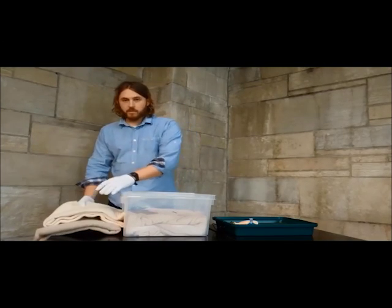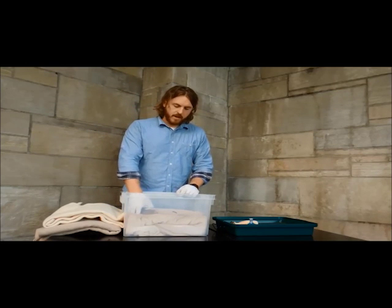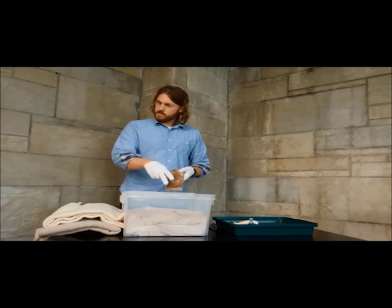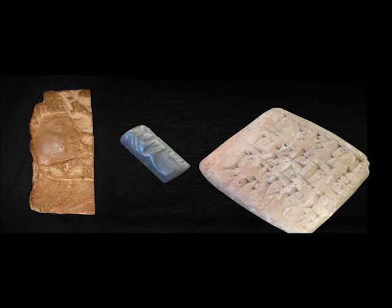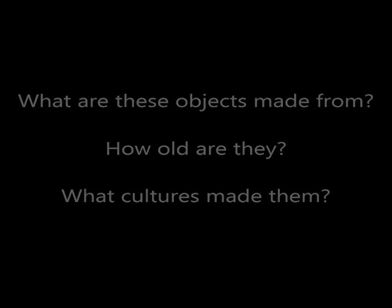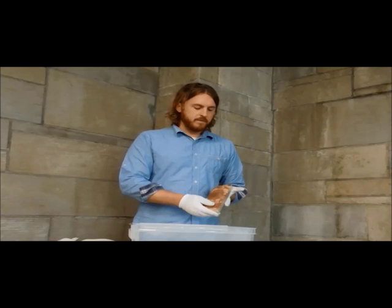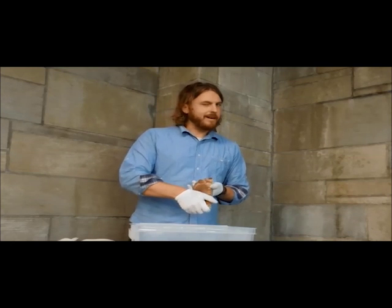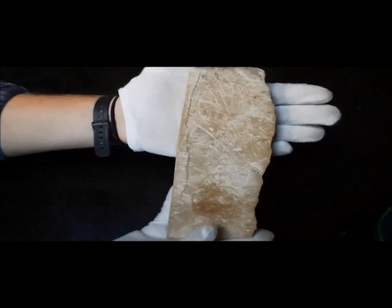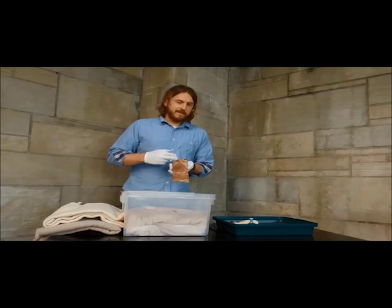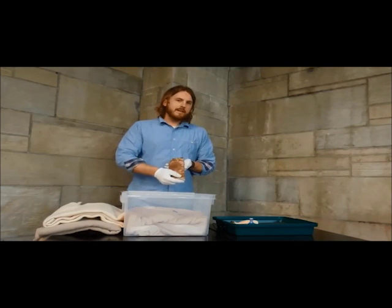The next layer — remember we're getting older as we go down further, the further we go the older we get — has three different objects. What do you think they're made out of, how old do you think they are, and what culture do you think they come from? The first one looks like a wall relief and it's actually made out of stone, probably limestone. It was chipped away from somewhere. It is what we call a wall relief — in relief on the surface of the stone itself. You guessed Egyptian, and you were right. This is definitely Egyptian, around 3,000 years old.